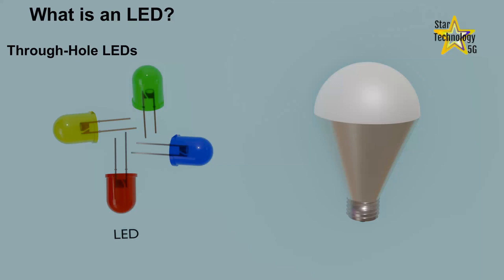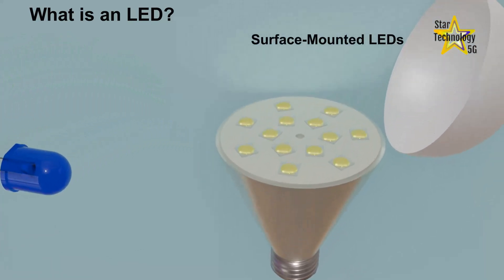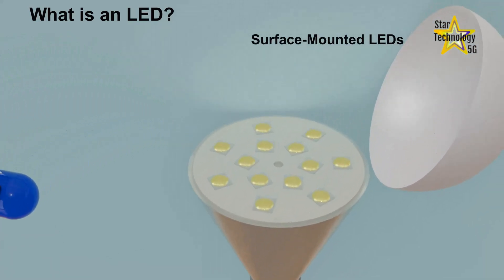These LEDs are called through-hole LEDs. This is an LED bulb. LED bulbs use surface-mounted LEDs inside them. When current flows through these LEDs, they emit light.